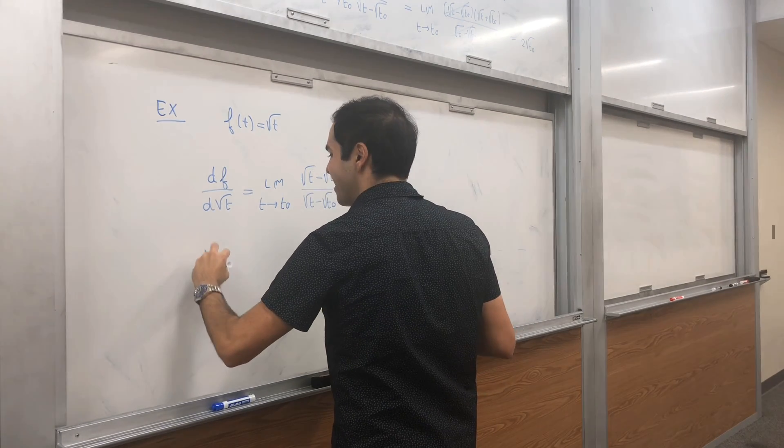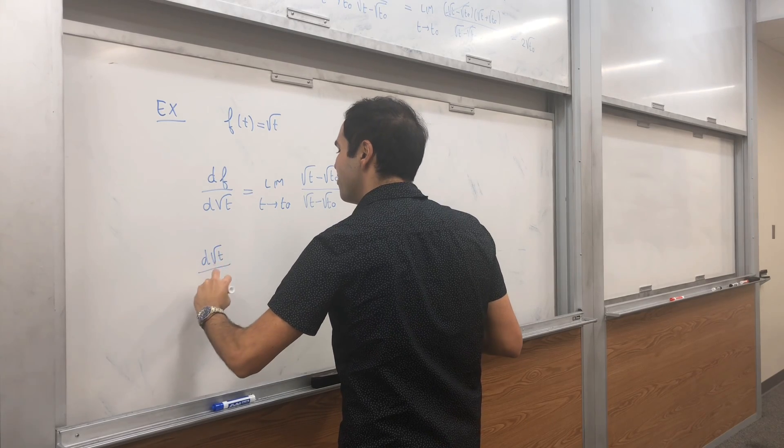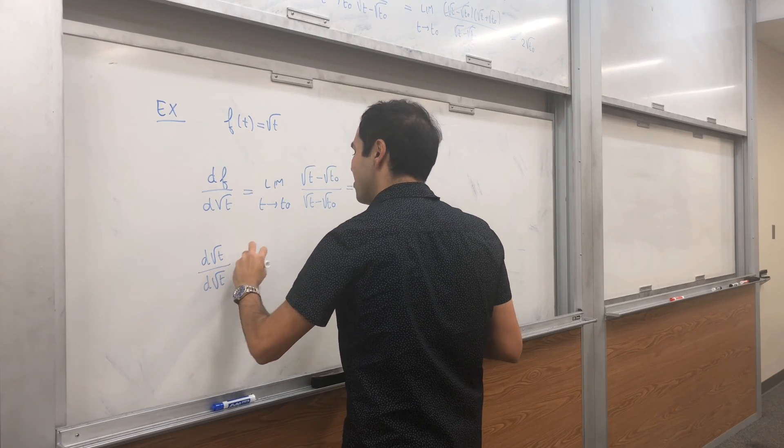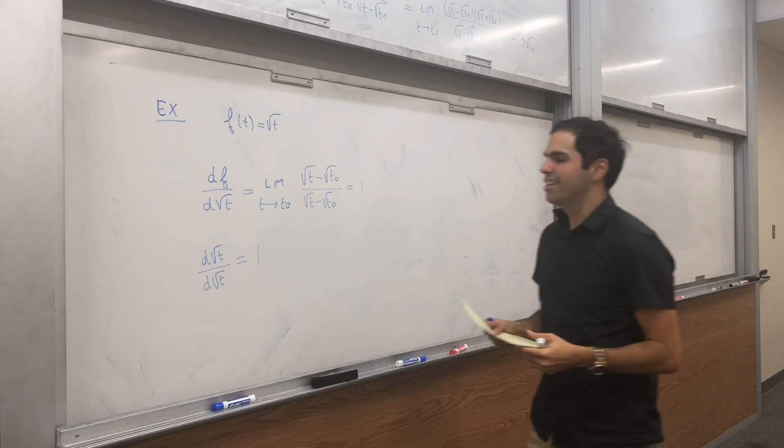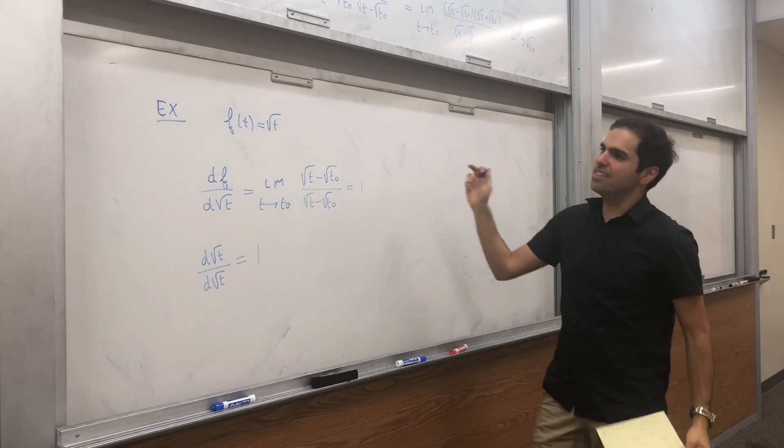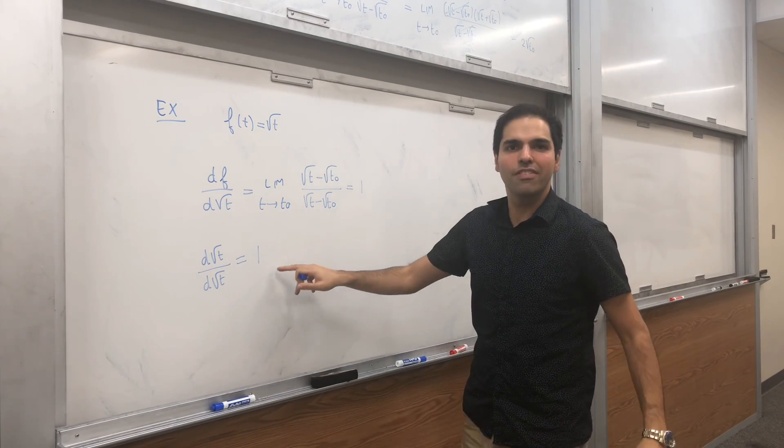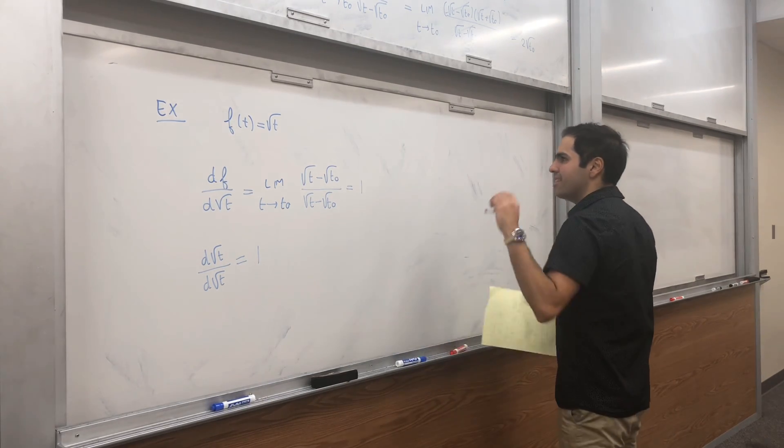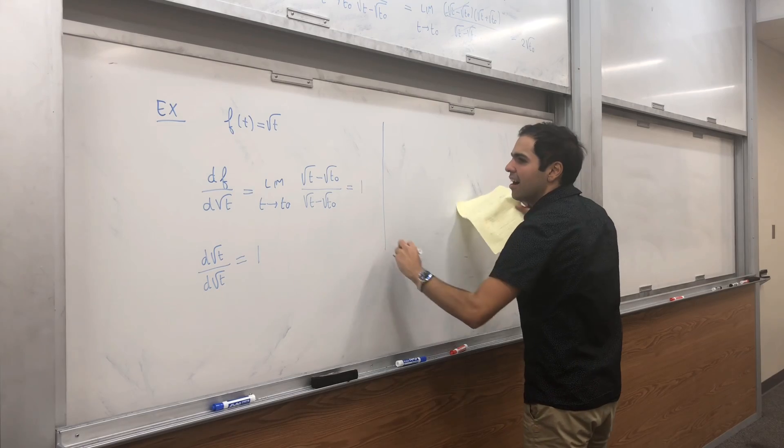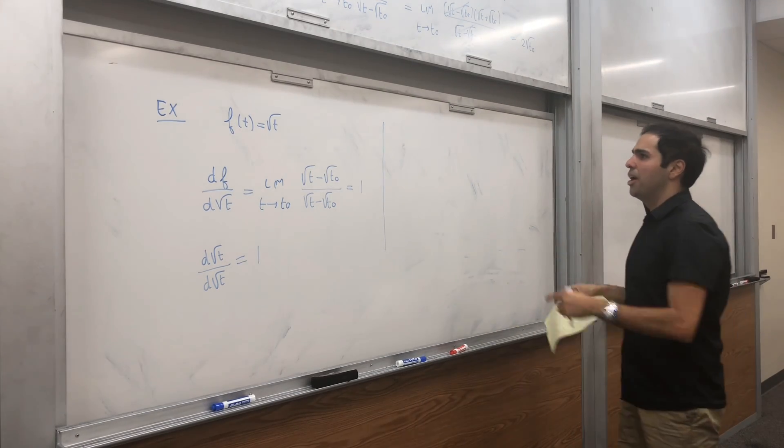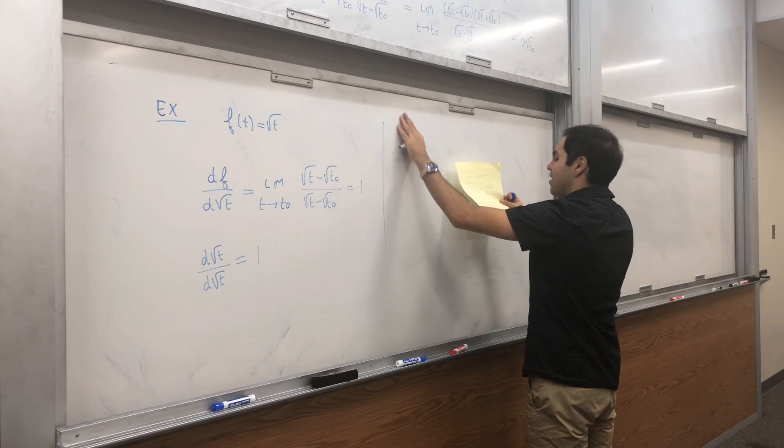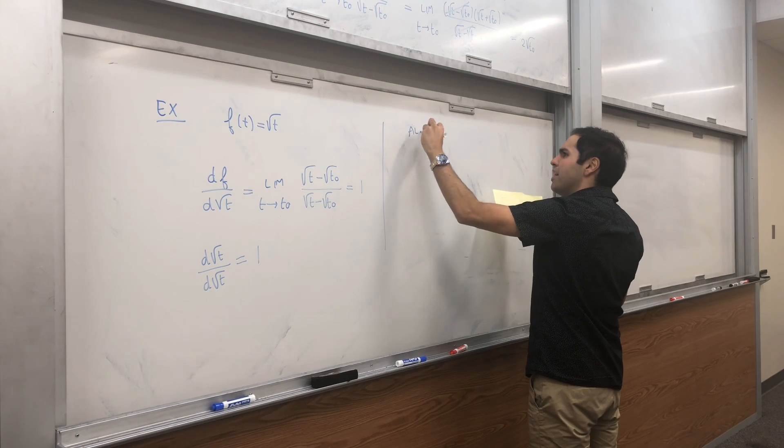So, just as expected, the derivative of square root of t over square root of t is one. And again, that's nice because even though this function is not differentiable at zero, the square root derivative of this is one. All right, and also, so just as a side comment,